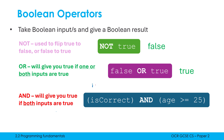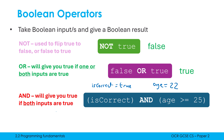Let's say initially isCorrect is equal to false. Well, it now doesn't matter what age is — age is completely irrelevant — because as soon as AND sees one of its inputs is false, the whole thing results in false. However, let's say isCorrect was true and age is equal to 22. Because 22 is not bigger than or equal to 25, this side is false, and so the whole thing is false despite the left-hand side being true. But if age was 26, well, 26 is bigger than or equal to 25, therefore the left-hand side is true and the right-hand side is true, therefore the whole thing is true.